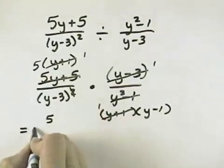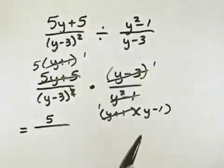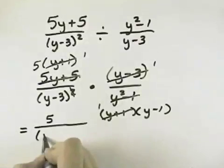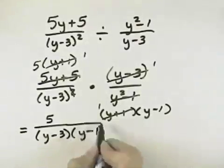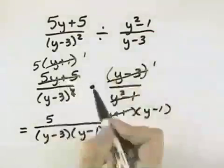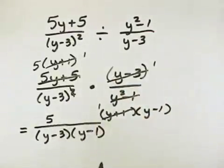And what that gives us is a 5 in our numerator, and there are no other factors, but our denominator has two factors. It has a y minus 3 and a y minus 1. So the simplified form of this result for this quotient is 5 divided by the quantity y minus 3 times y minus 1.